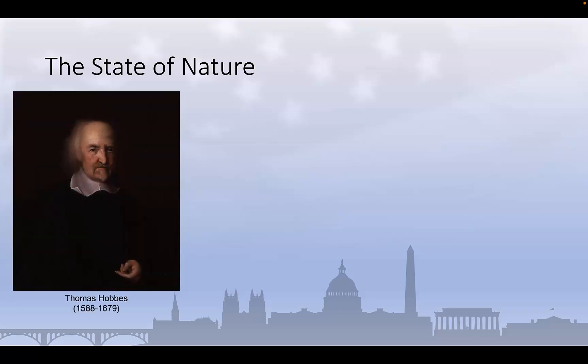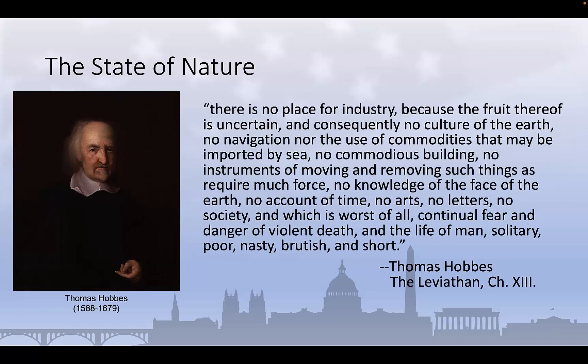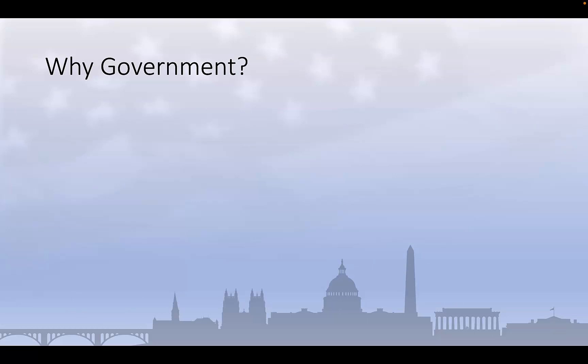In the words of Thomas Hobbes, one of the leading early social contract theorists, the state of nature was one of constant conflict, insecurity, and war. According to Hobbes, in the state of nature, there is no place for industry because the fruit thereof is uncertain, and consequently no culture of the earth, no navigation nor use of commodities that may be imported by sea, no commodious buildings, no instruments of moving and removing such things as require much force, no knowledge in the face of earth, no account of time, no arts, no letters, no society, and which is worst of all, continual fear and danger of violent death, and the life of man solitary, poor, nasty, brutish, and short.